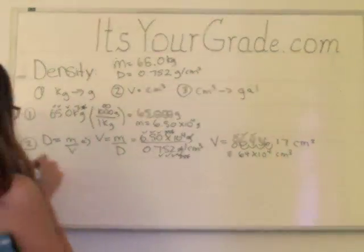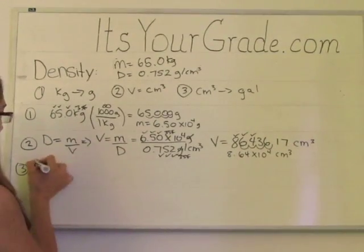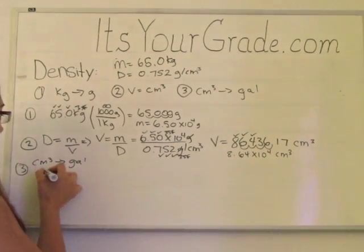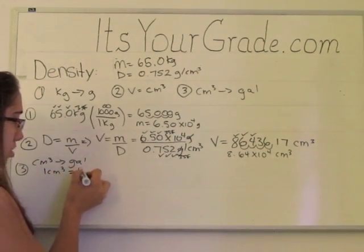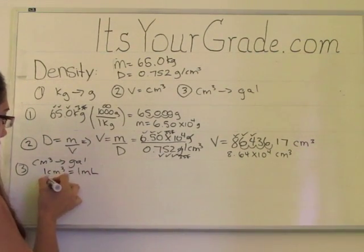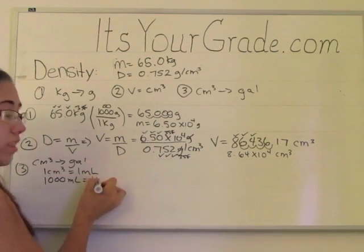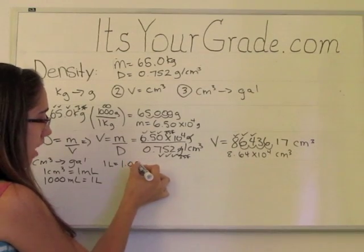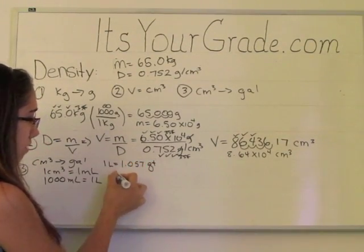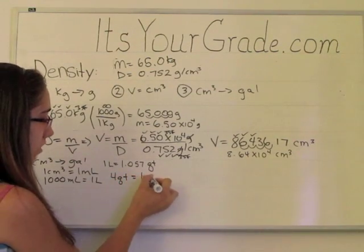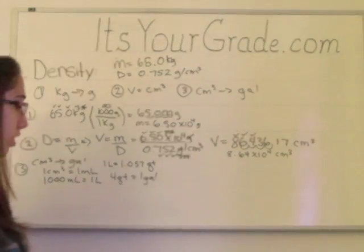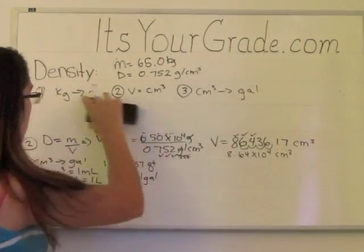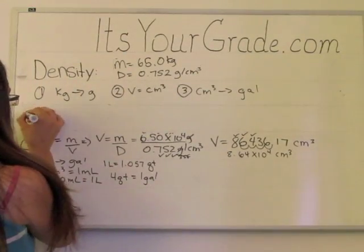We're almost there. The last step, we need to convert centimeters cubed into gallons. Well, what do we know? We know that one centimeter cubed is equal to one milliliter. We know that there's 1,000 milliliters in one liter, and we know that one liter is equal to 1.057 quarts, and we know that there are four quarts in one gallon. So this is going to be a big unit conversion. I think I need some more space, so I'm going to erase one of our sets here.